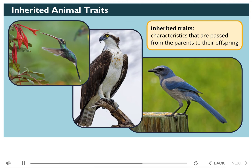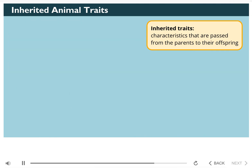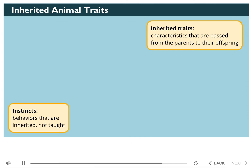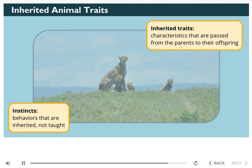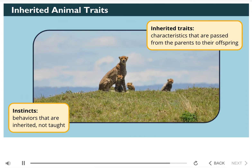Other inherited animal traits include skin texture, and if an animal lays eggs or gives live birth. Instincts are also inherited traits. Instincts are behaviors animals have that do not have to be taught. For example, when cheetah cubs are born, they know they're supposed to follow their mother — no one taught them this behavior.